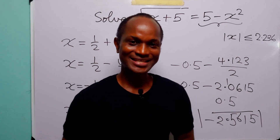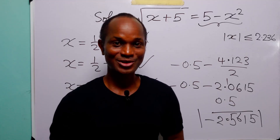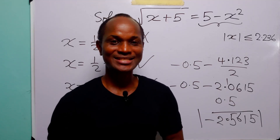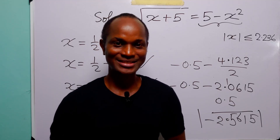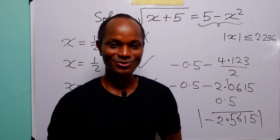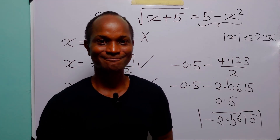So the only two values of x that satisfy the original square root equation are x = ½ - √21/2 and x = -½ + √17/2. That brings us to the end of today's exercise. I hope you learned something new — please subscribe, leave a like, thanks for watching, and see you in the next one!